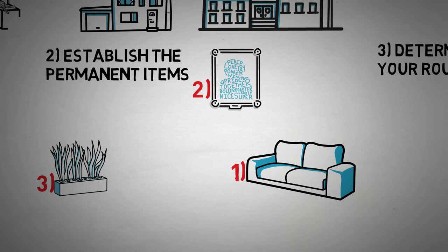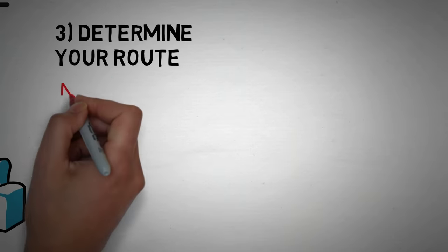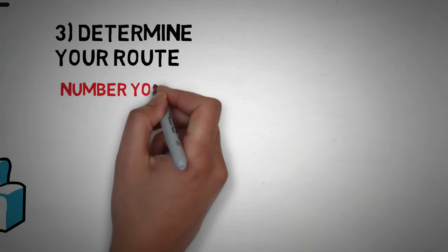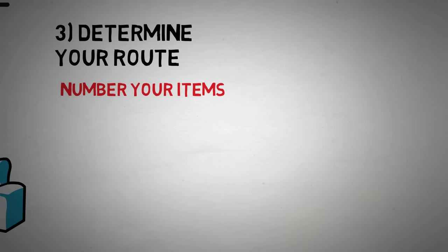A mind palace's functionality lies largely in repetition and visual cues. So now that you have your mind palace memorized and the items within it selected, you have to establish a route that you will always take when recalling things. In other words, you must order your items.